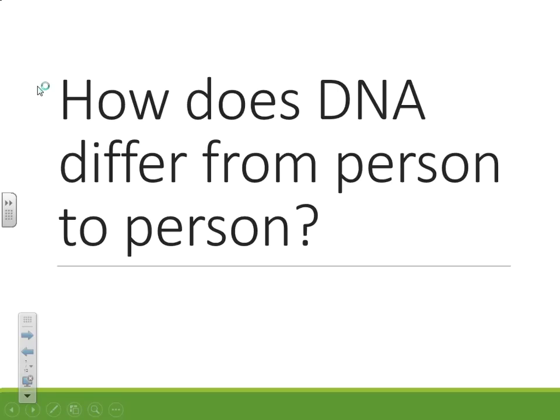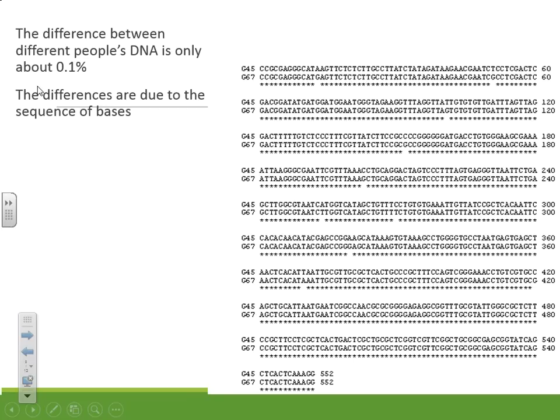How does DNA differ from person to person? Actually not very much — the difference between different people's DNA is only about 0.1%, and we get those differences based on the difference in the sequence of bases. The majority of our bases are the same because we need to do all the same things in our body. There's just a slight difference in sequences that attributes to physical traits like eye color and hair color.